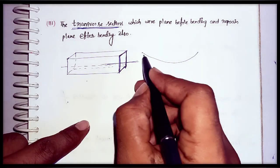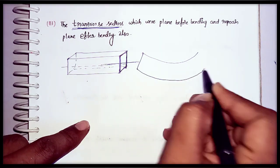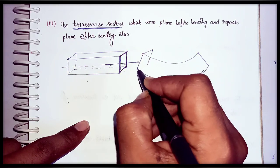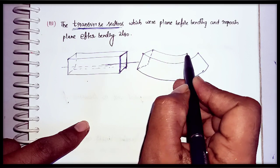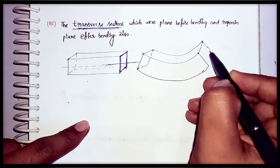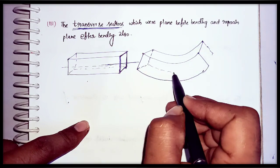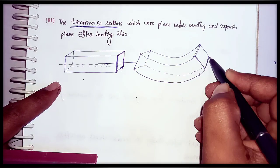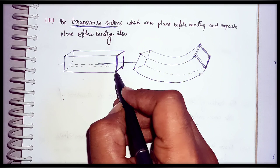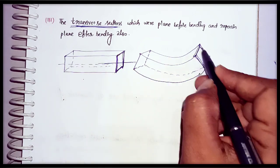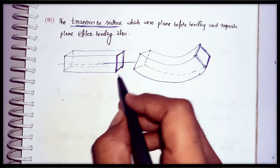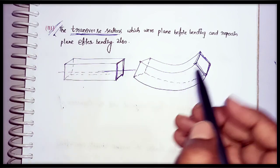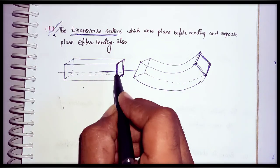After bending, when the beam deflects, the transverse sections drawn in 3D form still remain plane. Whatever position the transverse section had before bending, after bending the plane remains the same. This is the third assumption in the theory of simple bending.